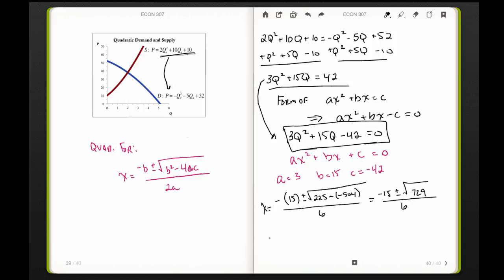My first solution is -15 + 27 over 6, and my second solution is -15 - 27 over 6. The square root of 729 is 27.